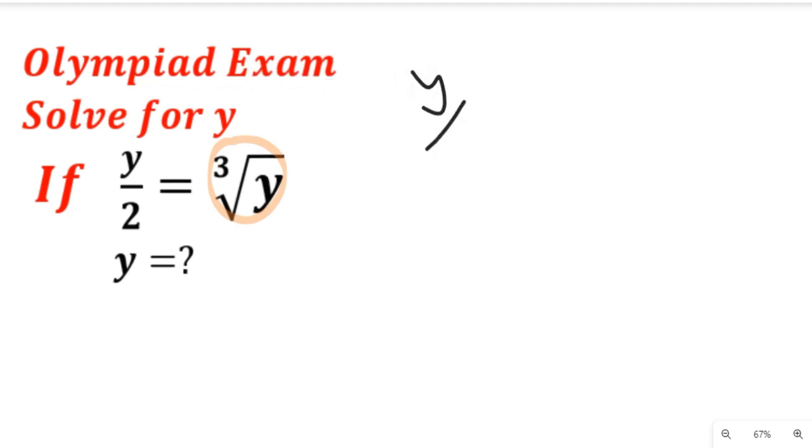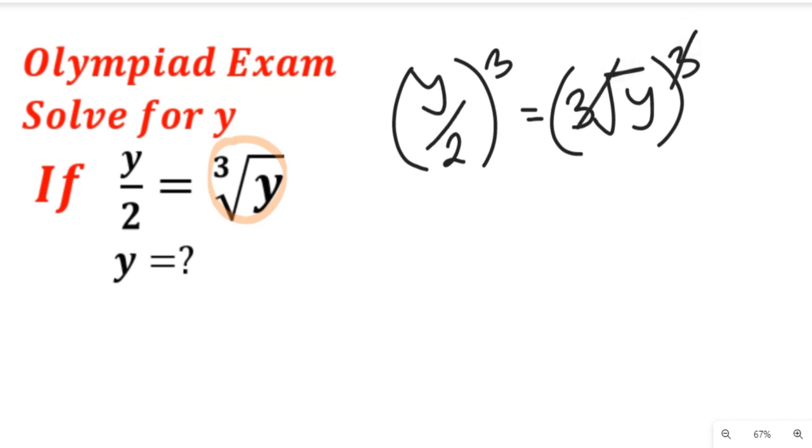This will give us y divided by 2, all cubed, and this will be equal to cube root of y, all cubed. So according to rule of mathematics, this cube will clear this cube root, and on the right hand side we'll have only y.